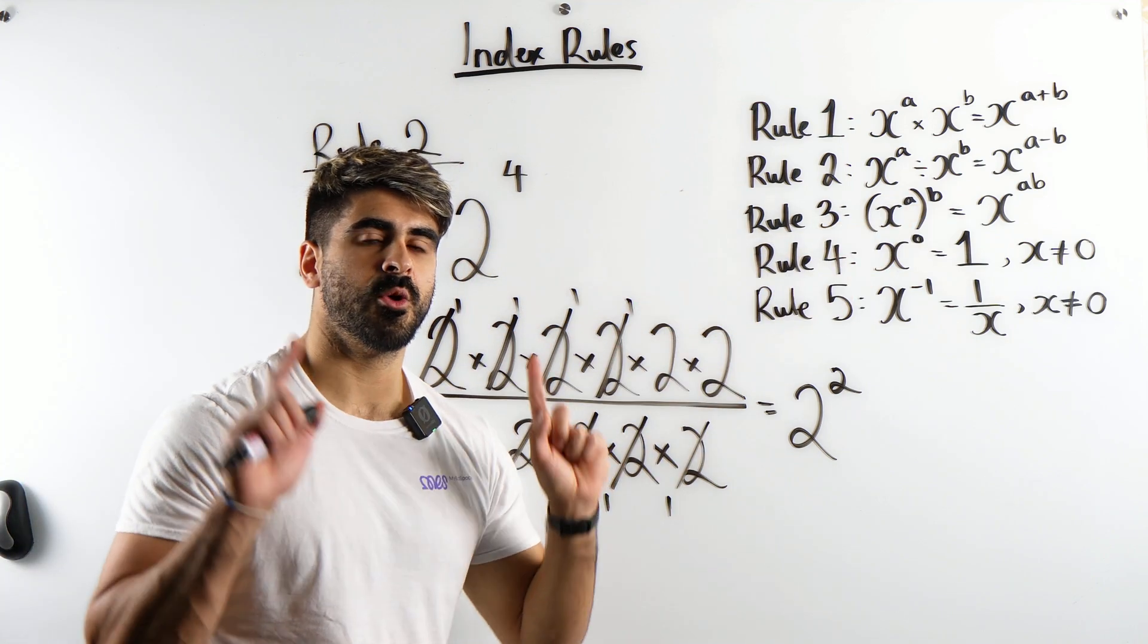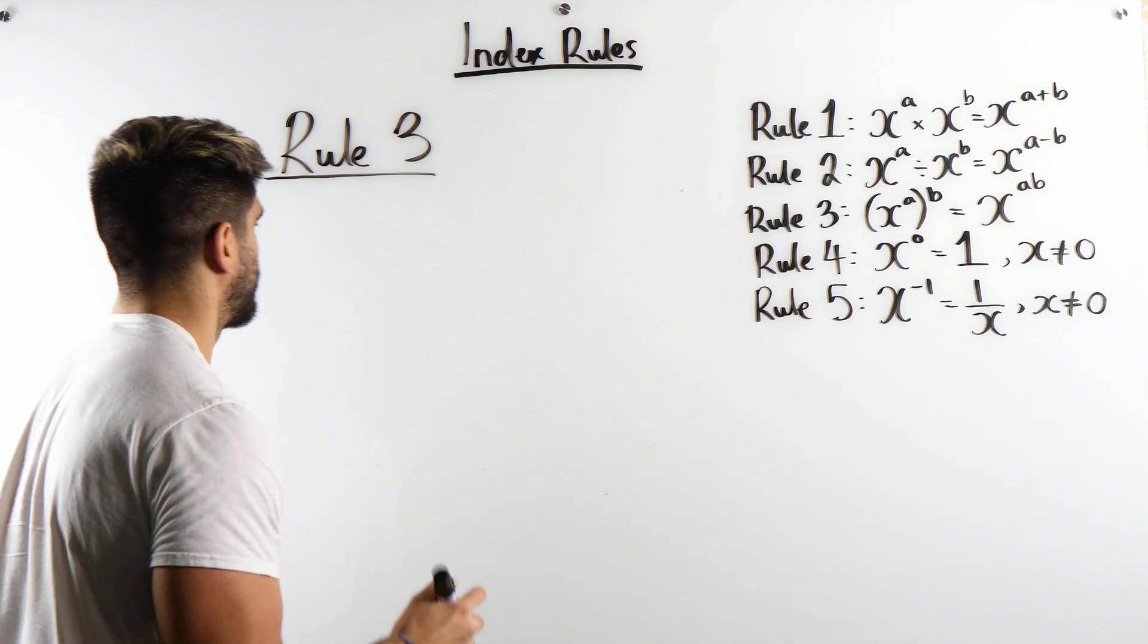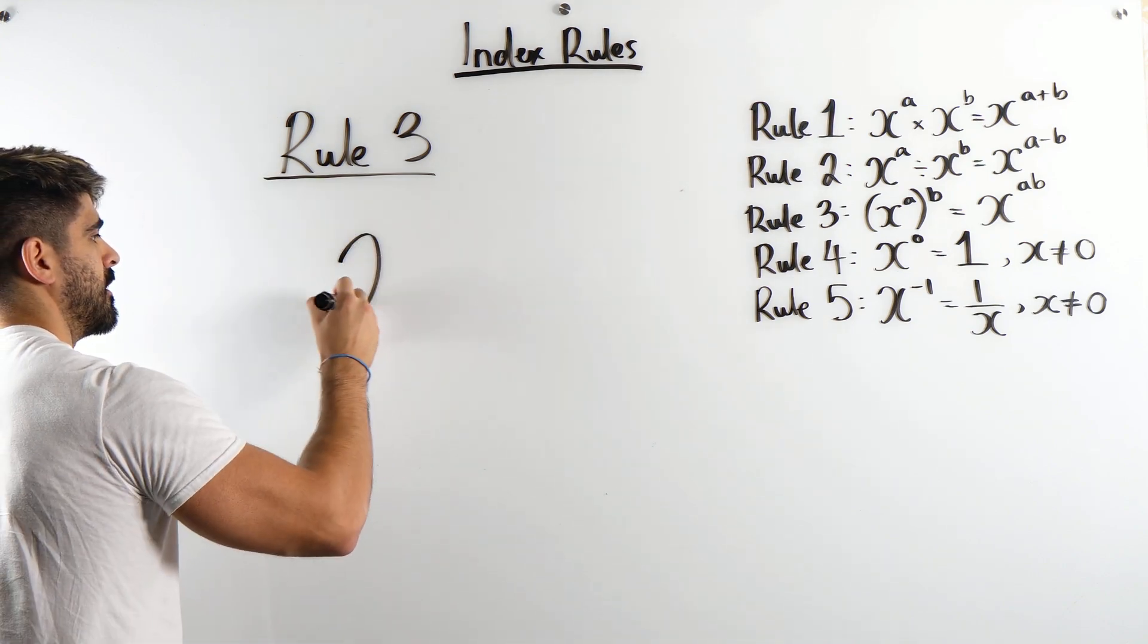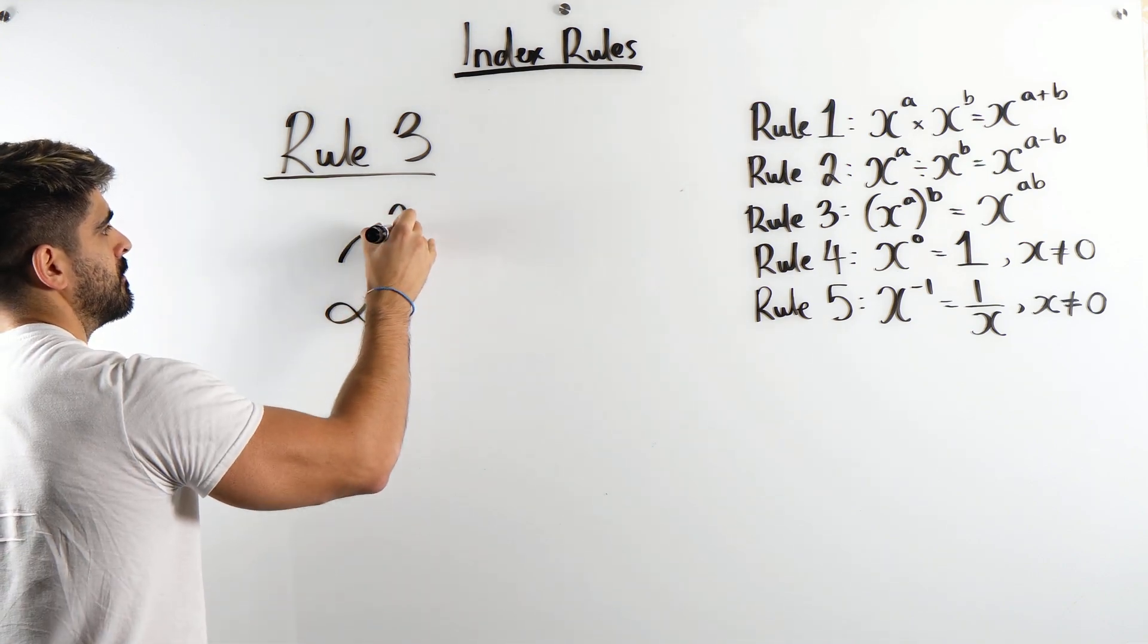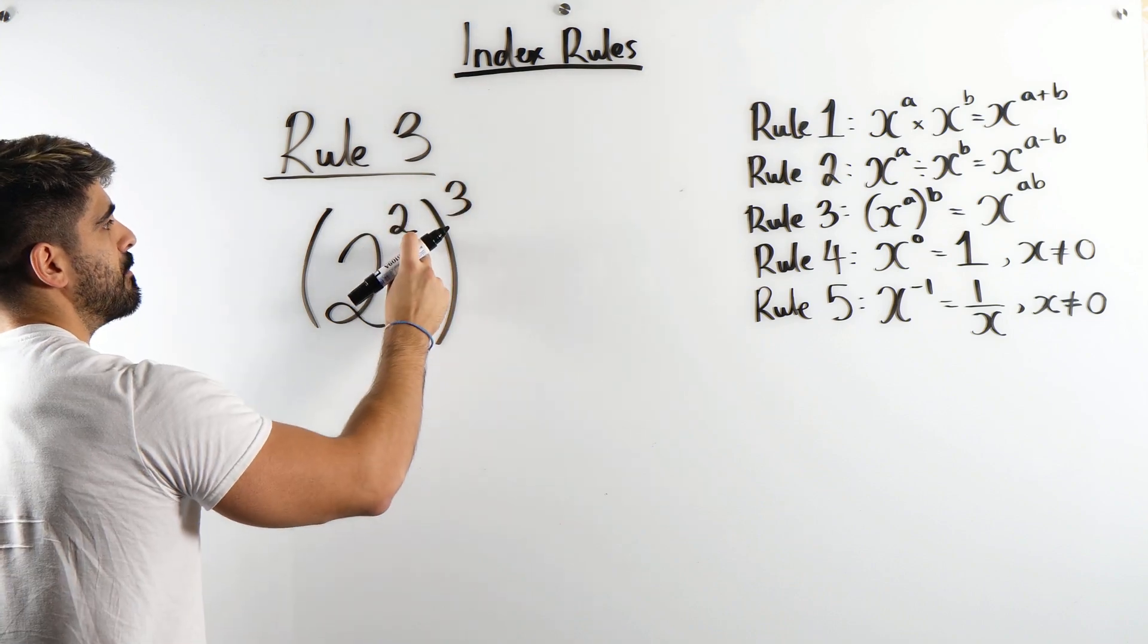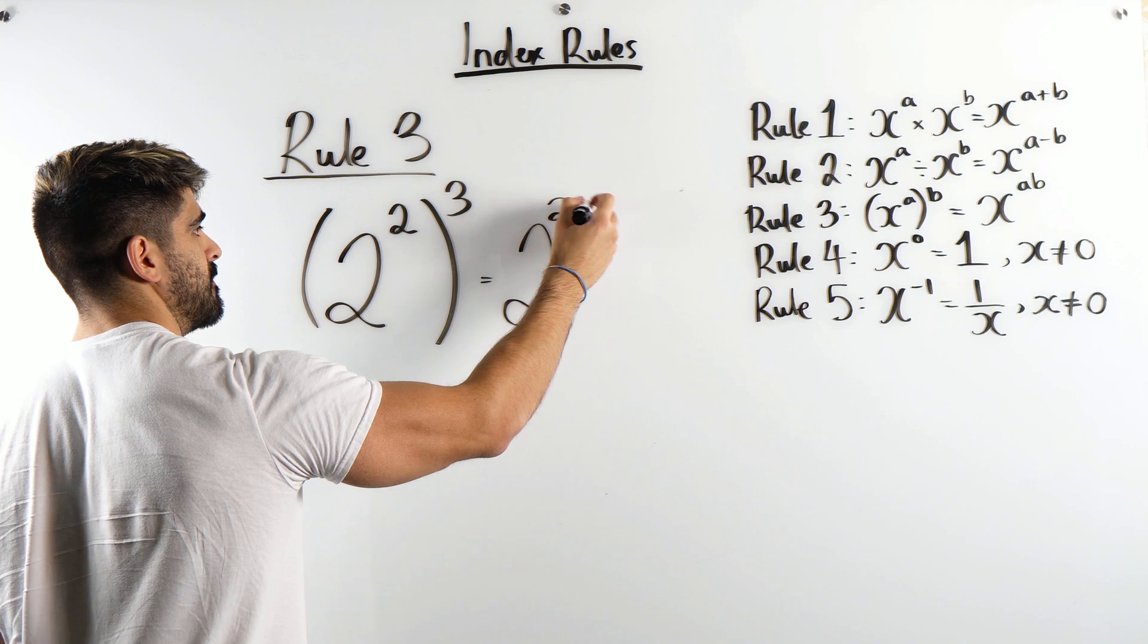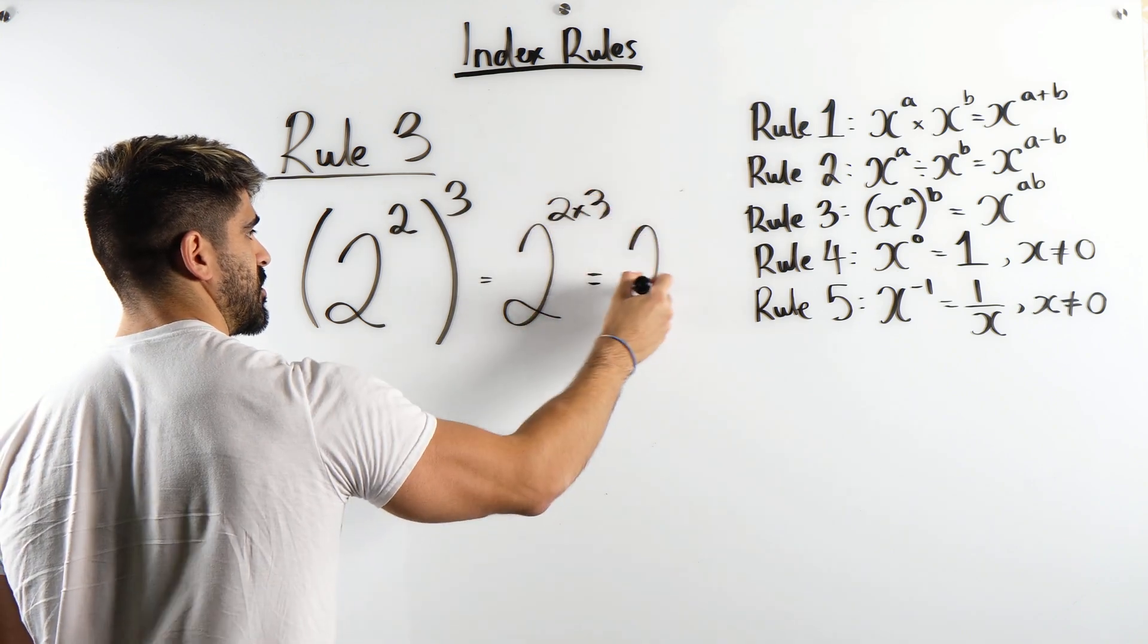Let's take a look at number 3 where when we take a number raised to a power, then we raise that whole thing to another power, we multiply the powers. Rule 3. When you take a number raised to a power and we raise this whole thing to a new power, we multiply the powers. It will become 2 to the power of 2 times 3 which is 2 to the power of 6.